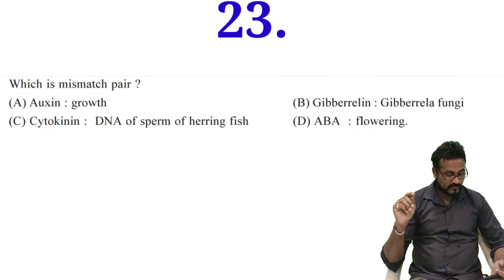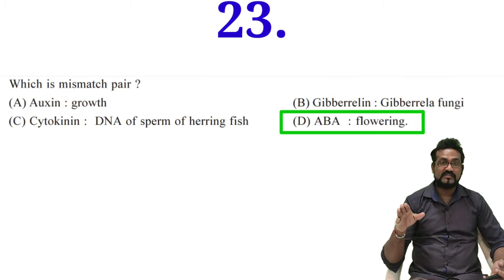23rd question, which is mismatch among the following? Auxin growth, gibberellin fungi, cytokinin DNA of sperm, ABA flowering. ABA always inhibitory hormone. Remember, it does not produce flowering. So it was mismatch.